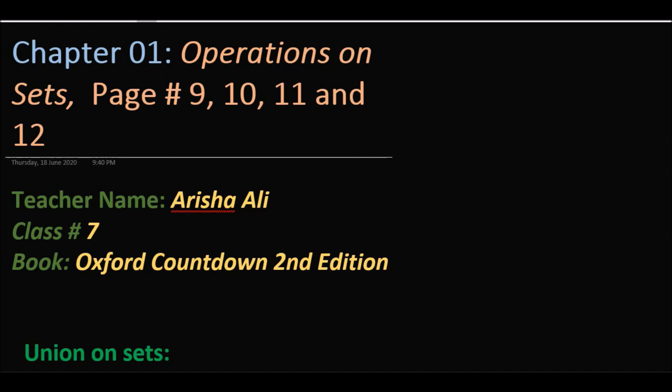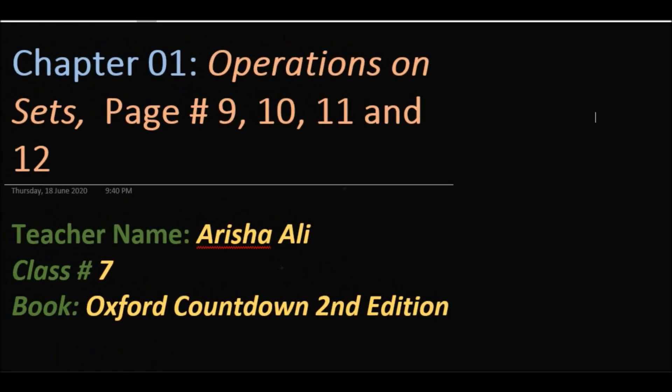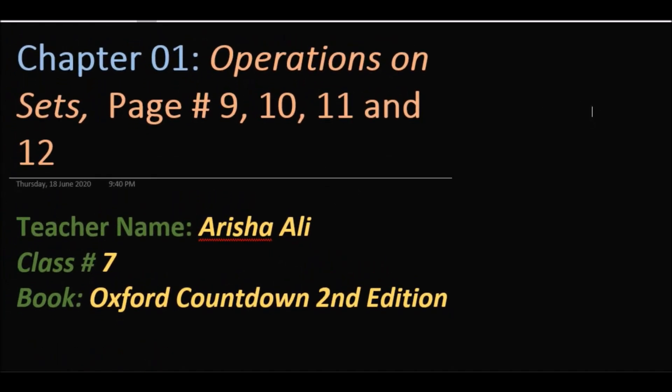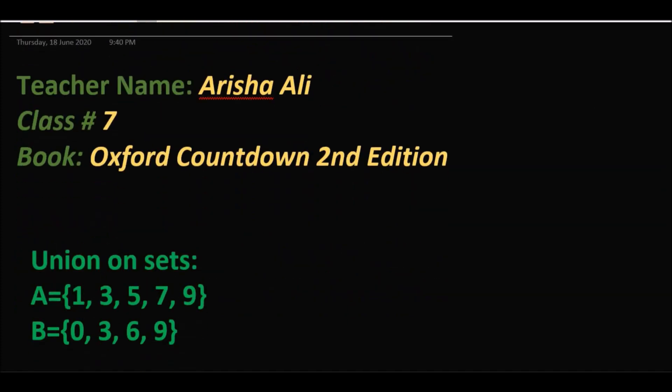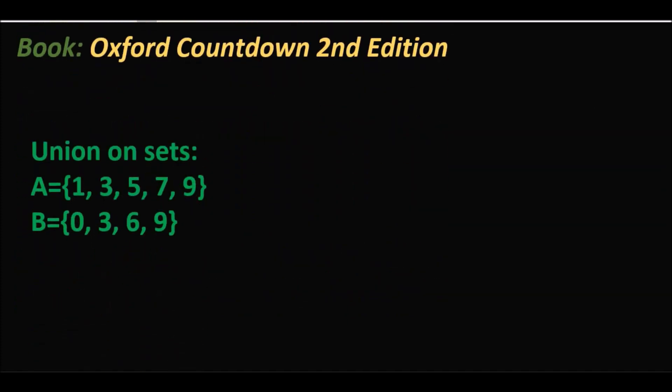سب سے پہلے ہم operations on the set کے اوپر بات کرتے ہیں کہ operations on the set کیا ہوتے ہیں۔ Operations وہ ہوتے ہیں جو sets کے اوپر perform کیا جاتے ہیں، جس میں include ہے union، intersection، complement اور difference۔ اب ہم اس کو one by one discuss کرتے ہیں۔